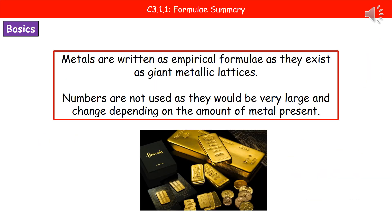Taking metals as our first example: because they occur as giant metallic lattices, we don't write the formula including all the numbers of atoms present, as that would result in very large numbers. Instead, we write metals as their empirical formula — the simplest ratio. That's why metals like Mg or Zn are written just as their symbol on its own.